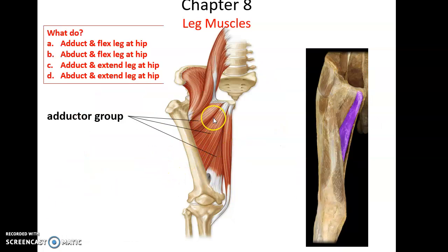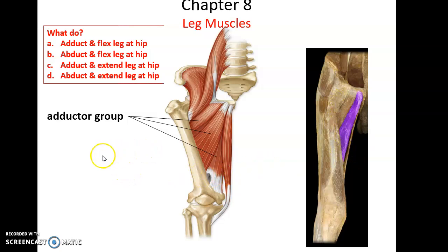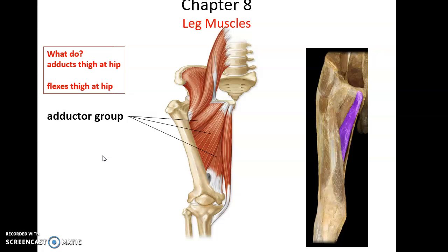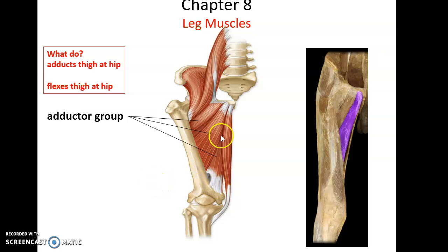The adductor group is a collection of muscles in the medial compartment. What does it do? It helps to adduct the thigh at the hip and also flex the thigh at the hip. When it contracts, it adducts — pulling the leg inward if it's sticking out laterally — and can also help to flex or raise the thigh at the hip.